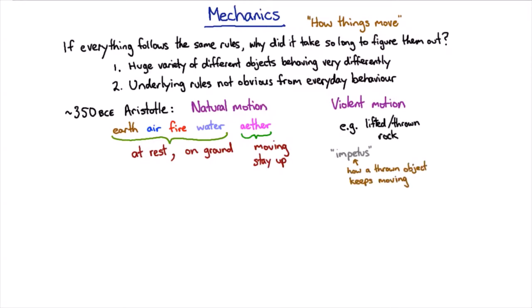Impetus is the set of ideas that try to describe from an Aristotelian point of view how something that's been thrown keeps moving even once you let go of it. This was invented by a Greek philosopher and subsequently refined and analyzed by Persian philosophers and then Western philosophers until finally it came to Galileo Galilei.